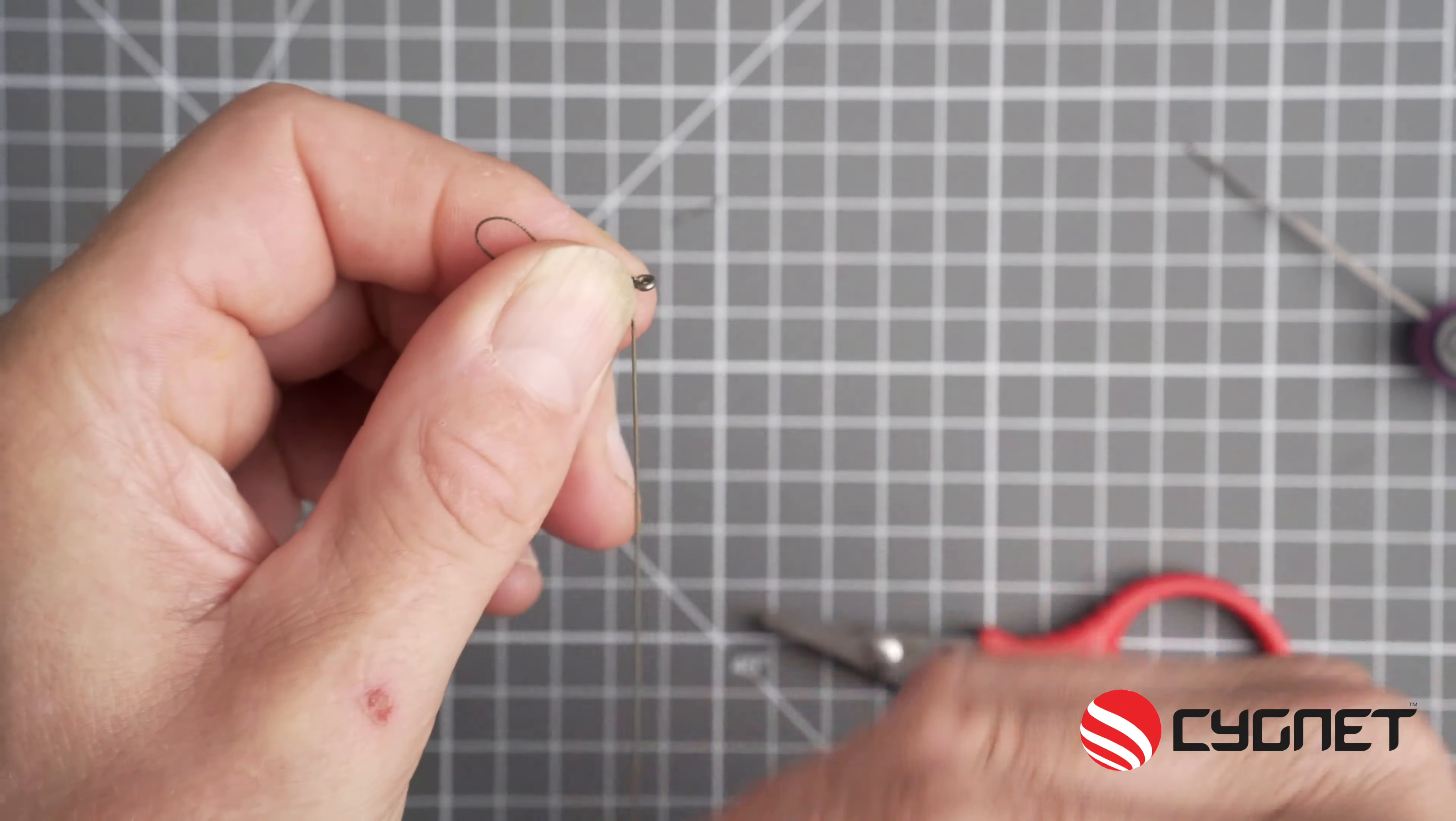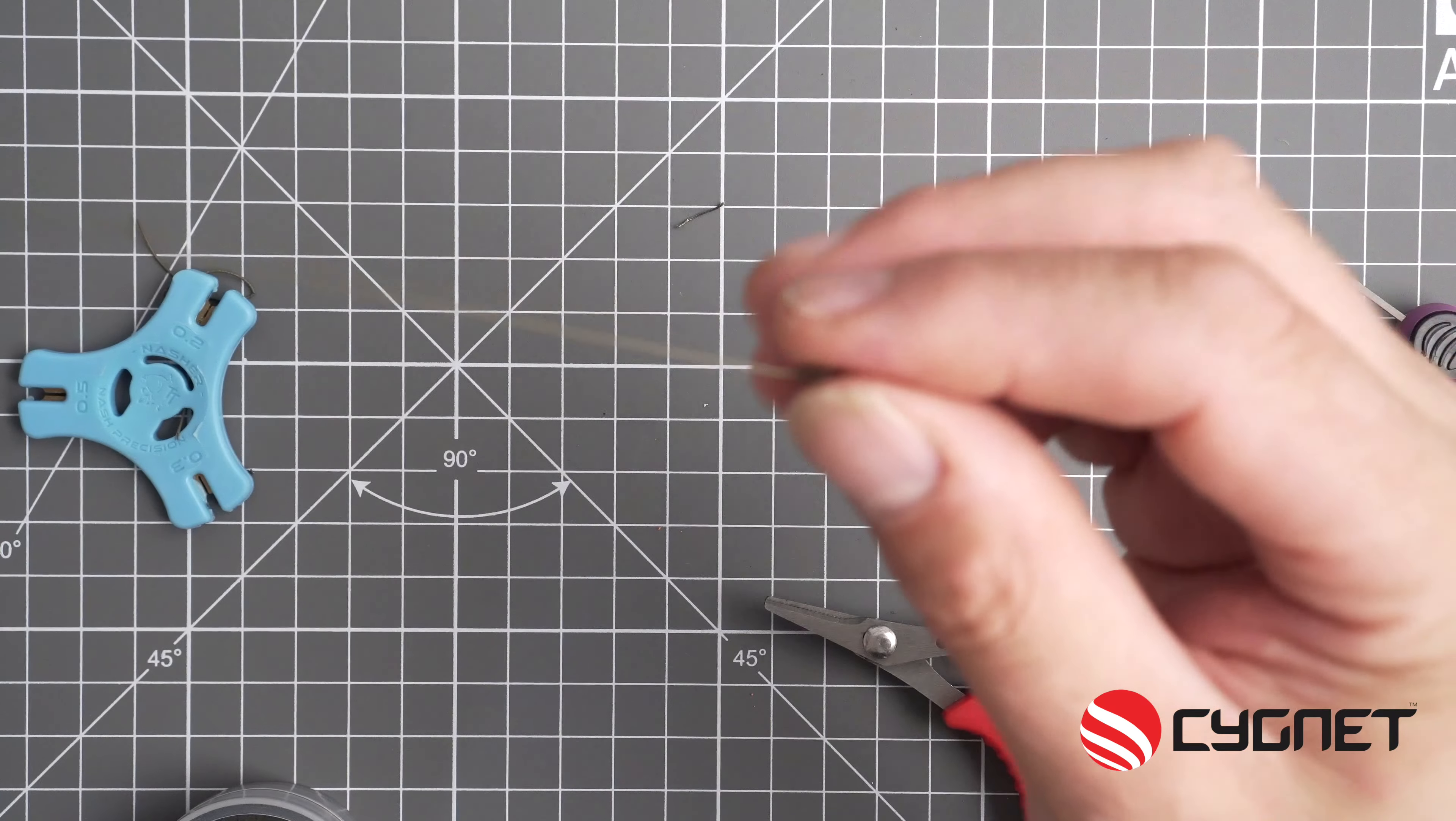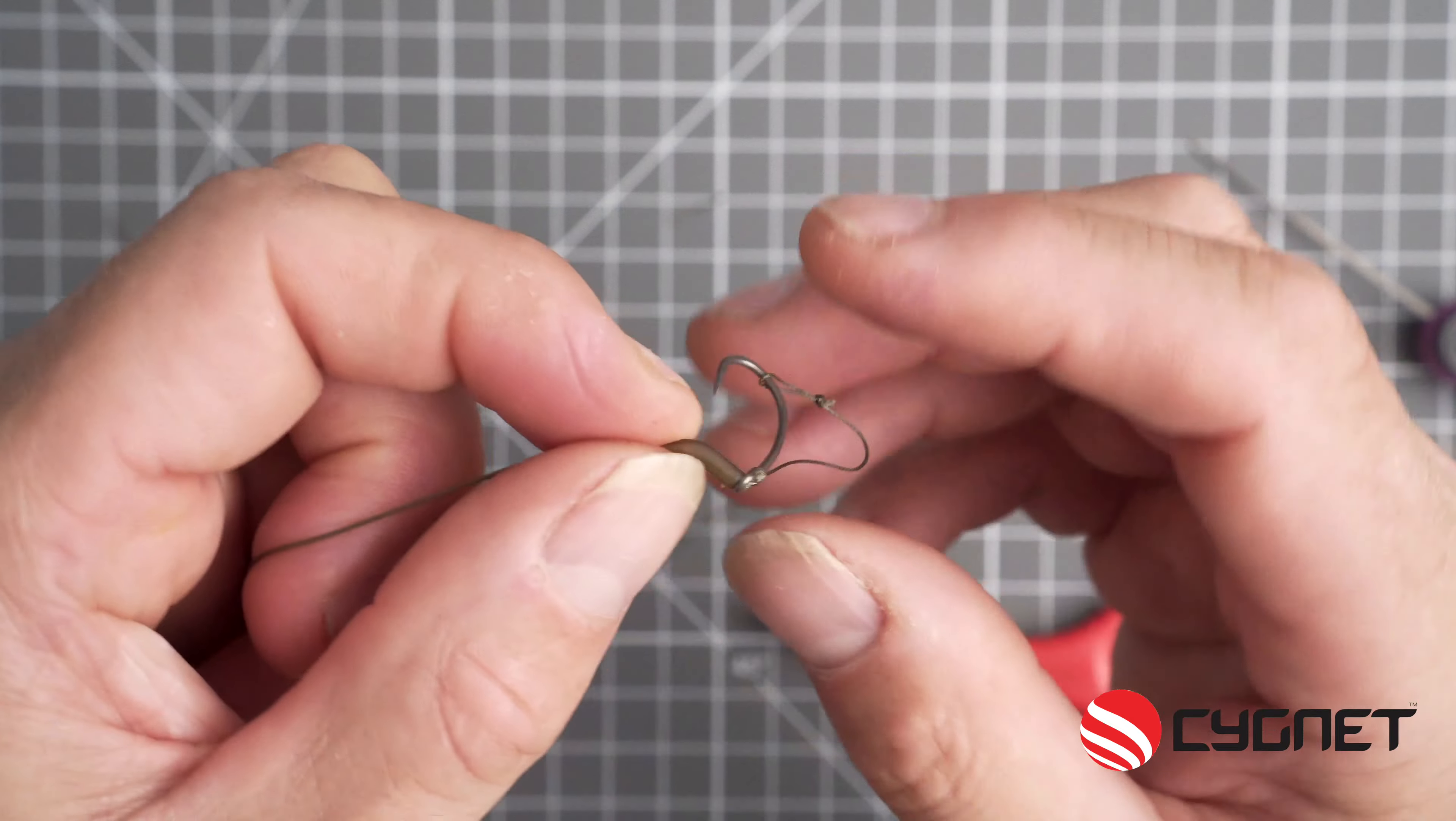You need a small kicker, so we're using a Cygnet hook rigger. Pass your swivel end of the hook link through the wide end of the rigger and slide it up to completely cover the knot that you've just tied.